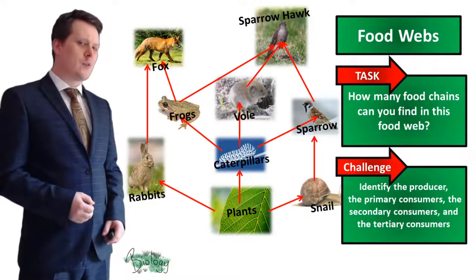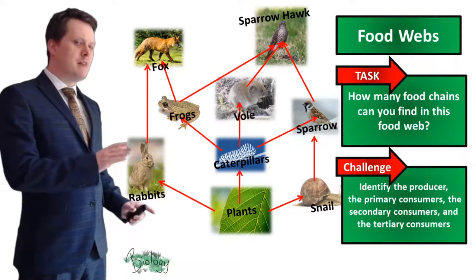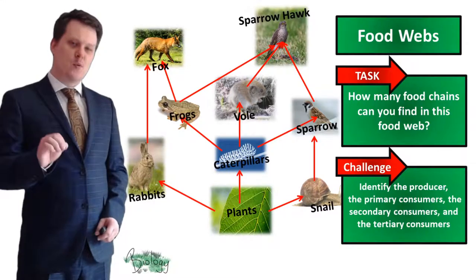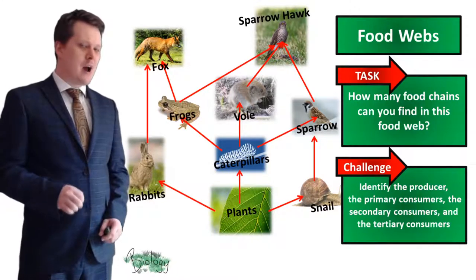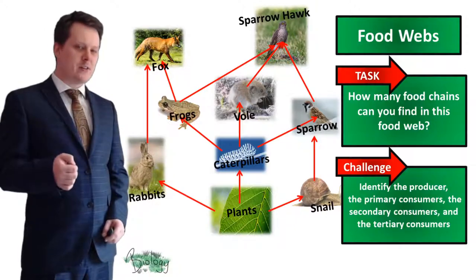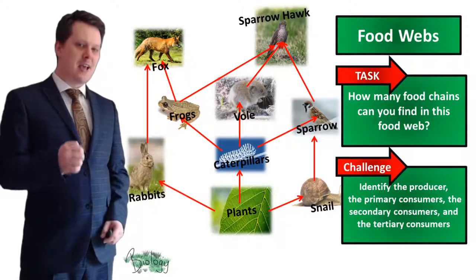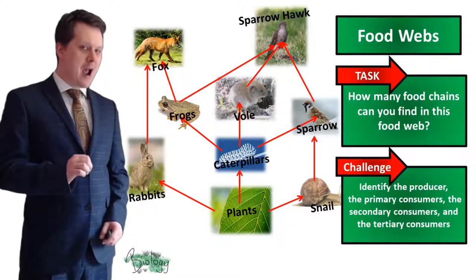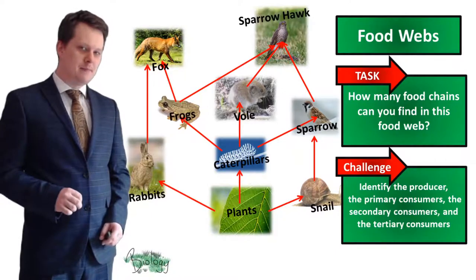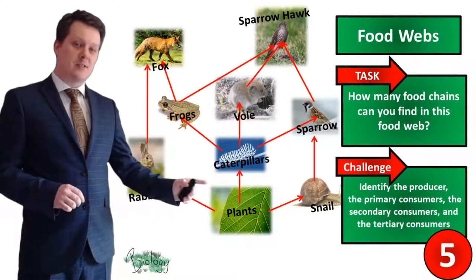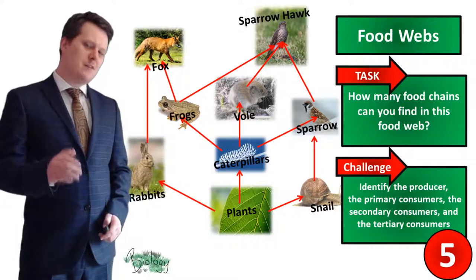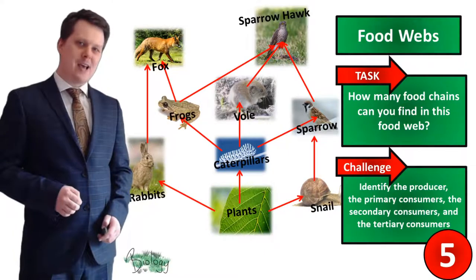For your next task, find as many food chains as you can in this food web. For a challenge, identify the producer, primary consumers, secondary consumers, and tertiary consumers. Pause the video if you need more time.